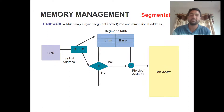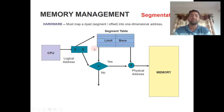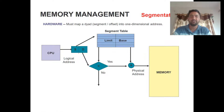The process is the same as the paging technique, except that segments are of varying size. The offset defines the size of the segment, so the offset is checked to see if it is less than the limit of the particular frame in memory. If it is less, it is converted to the physical address; otherwise it is discarded.